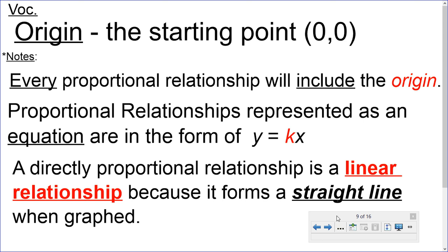A directly proportional relationship is a linear relationship because it forms a straight line when graphed. Linear, if you look at the spelling, the first four letters is the word line. So, that's how you remember linear relationship when it's graphed. It makes a straight line.